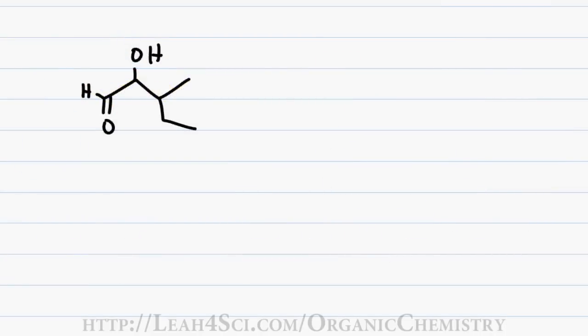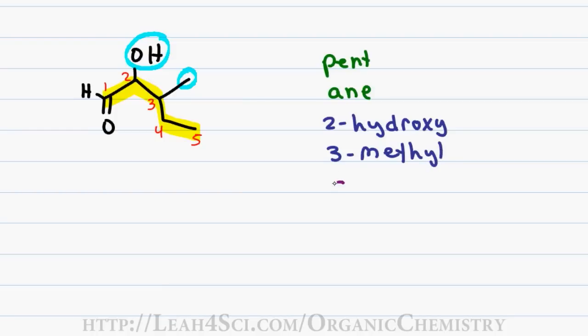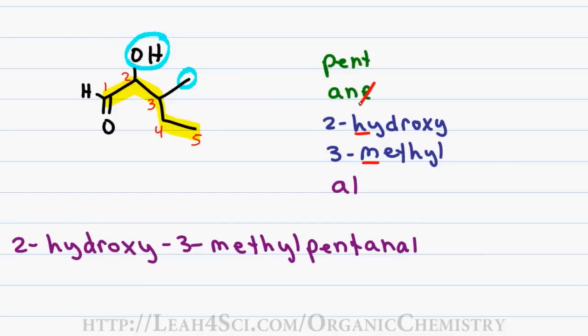Here we have an interesting example given that the alcohol is not your highest priority and therefore gets demoted from a functional group that ends in O-L to a substituent with a prefix hydroxy. I start by identifying and highlighting my longest carbon chain and numbering to give the aldehyde number 1. 5 carbons gives me a first name of pent, only single bonds gives me a last name of ane. My OH substituent on carbon 2 gives me the prefix 2-hydroxy and the methyl substituent on carbon 3 gives me the prefix 3-methyl. And let's not forget the aldehyde giving me the suffix AL. Since H comes before M, we get a final name of 2-hydroxy-3-methylpentanal, remembering to drop the E before the AL.